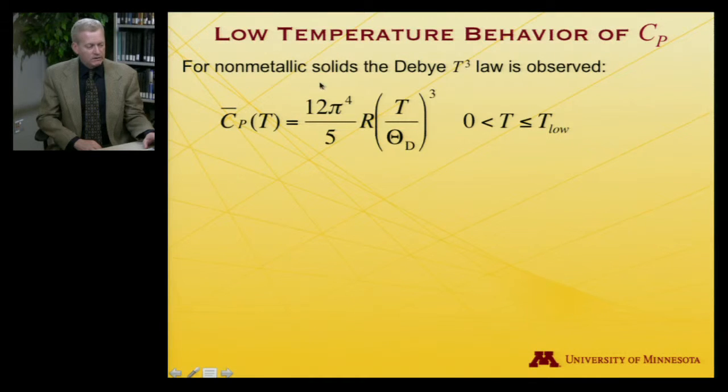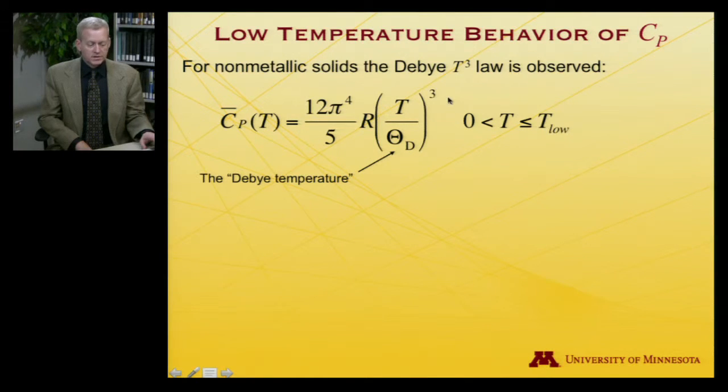Now it's also helpful to take a more careful look at the low temperature behavior of the constant pressure heat capacity. And if we have a non-metallic solid, so an insulator that is, the Debye T cubed law is generally observed to hold. And that says the following. It says that the constant pressure heat capacity, the molar constant pressure heat capacity, is equal to a series of constants, 12 pi to the fourth power over five times the universal gas constant times the quantity T over capital theta sub D. That's called the Debye temperature. And that quantity all cubed. So it has units of Kelvin, so this becomes a unitless quantity. And R has the same units as heat capacity, so that all holds. So as long as the temperature is below some limit, this expression holds.